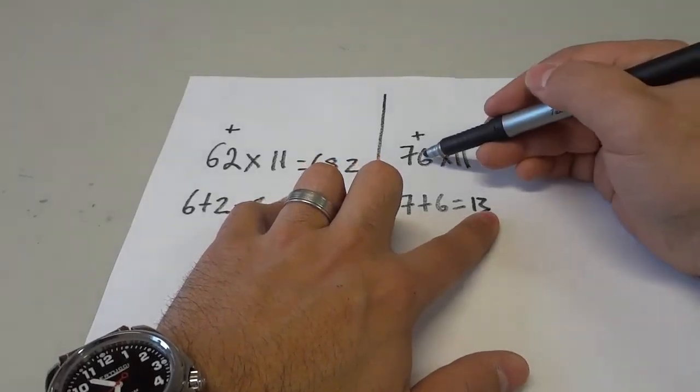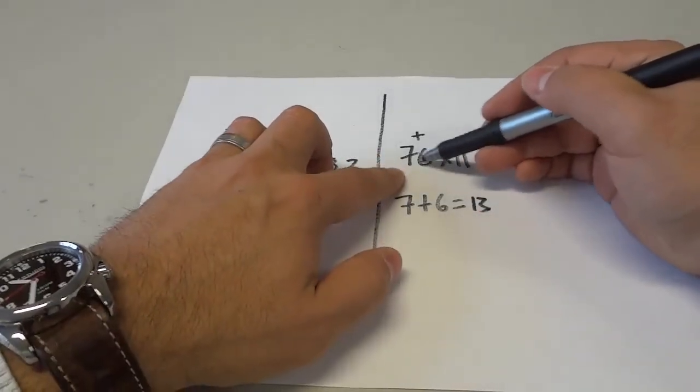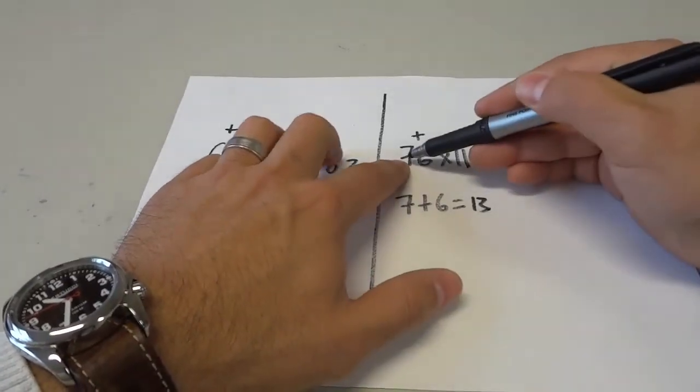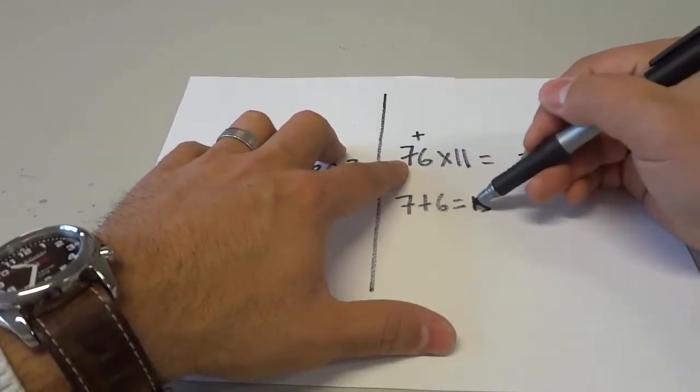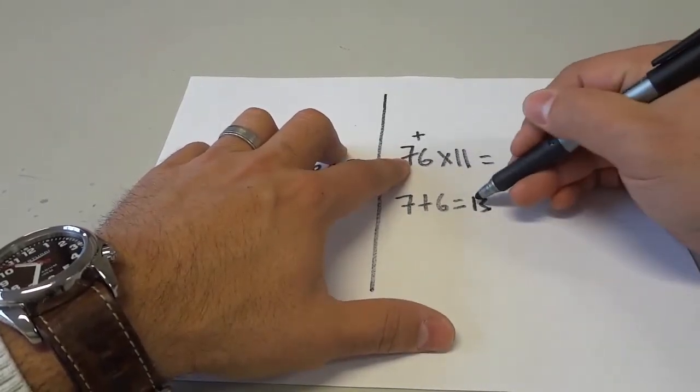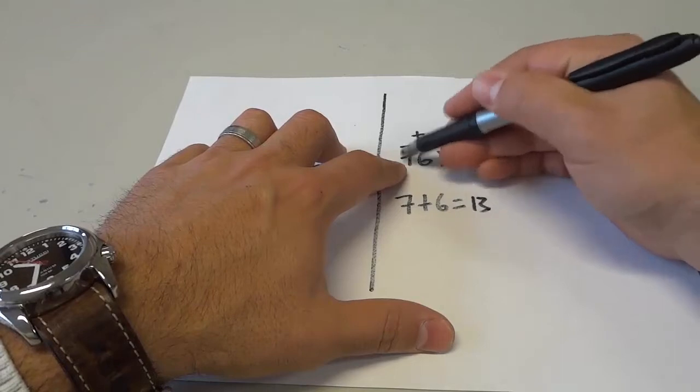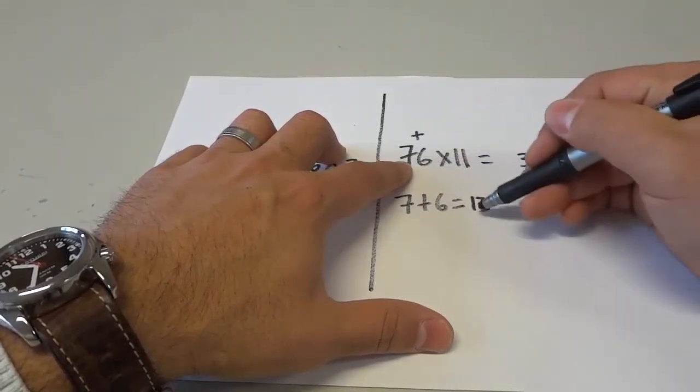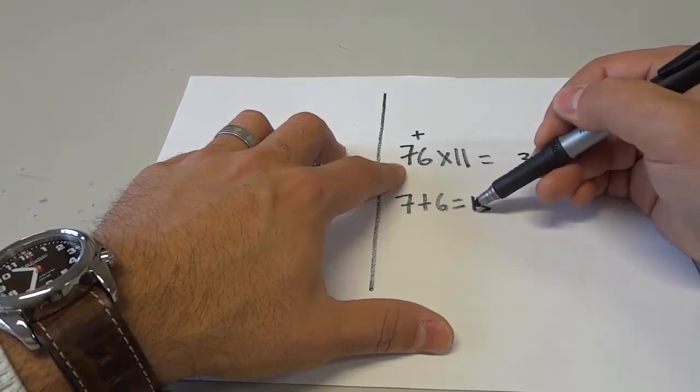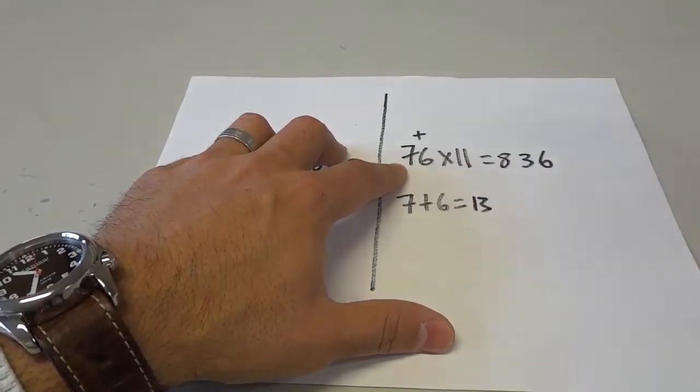Now, the right number of these non-11 numbers stays the same. And the left number gets added to this number right here. The left number on the non-11 numbers gets added to the left digit of this number right here. So the 7 gets added to the 1, which gives us 8. 836.